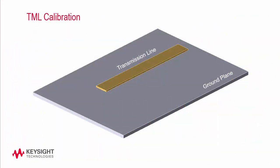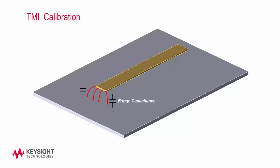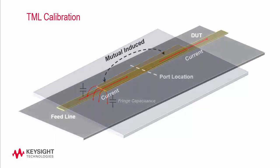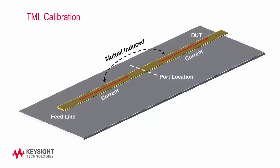Let's start with TML calibration. Suppose you want to characterize the transmission line structure shown in the slide. By directly attaching a source between the plus and minus terminals of the port, you will see some fringe capacitance from the open-end effects, which is an unwanted parasitic that you may want to remove from the results. Furthermore, when the transmission line is connected to another transmission line structure, you may want to include the mutual coupling between the two because it is not included in the model. TML calibration is developed to accommodate both of these effects.